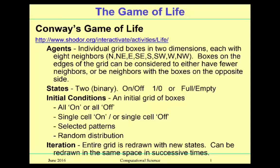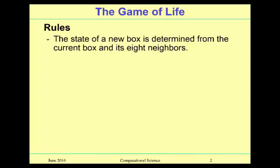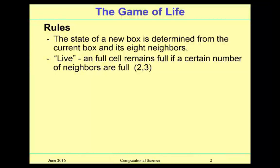An iteration is redrawing the entire grid with all the new states. You can either redraw it in the same space or redraw it in another place so that you can see the progression. Now let's look at Conway's rules — the rules for the Game of Life. The state of a new box is determined from the current box and its eight neighbors. If a cell lives, that means it was a full or on cell and it remains full. That only happens if it has exactly two or exactly three neighbors that are also full — meaning it is comfortable and survives.